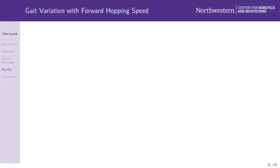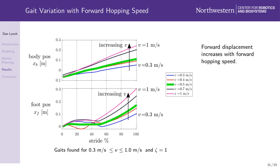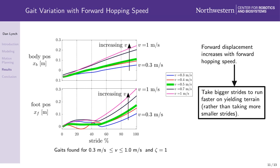Our framework also allows us to compare gaits found for hopping at different speeds on the same ground. Looking at the horizontal aspect of the gaits, we see something both reassuring but also interesting. The body and foot displaced farther forward as the commanded hopping speed increases. This suggests that it's preferable to take bigger strides in order to run faster on yielding terrain, rather than taking more small strides. Again, this could relate to spending less time in yielding stance.